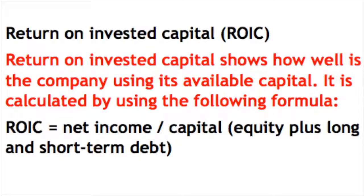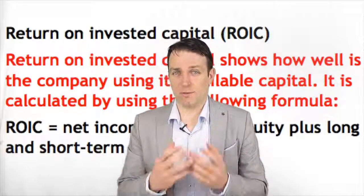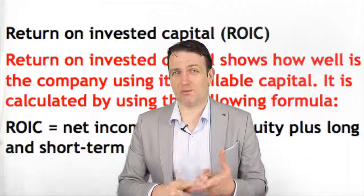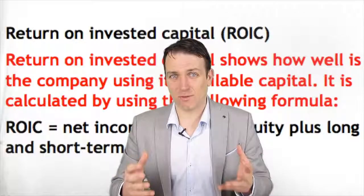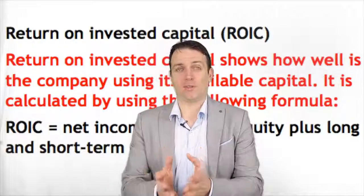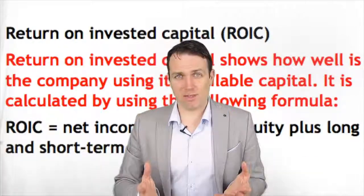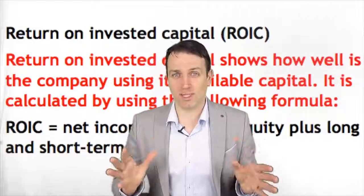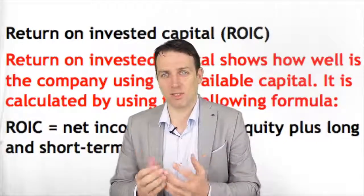Return on Investment Capital shows how well a company is using available capital. It's calculated using the formula: Return on Investment Capital equals net income divided by capital, which is equity plus long-term and short-term debt. You will see many versions of the formula that exclude taxes and interest expenses from net income, or goodwill and excess cash from capital. There are many variations, so you can choose whatever you want.